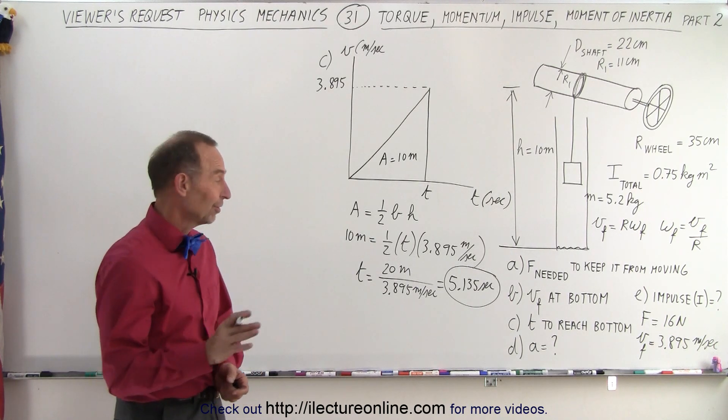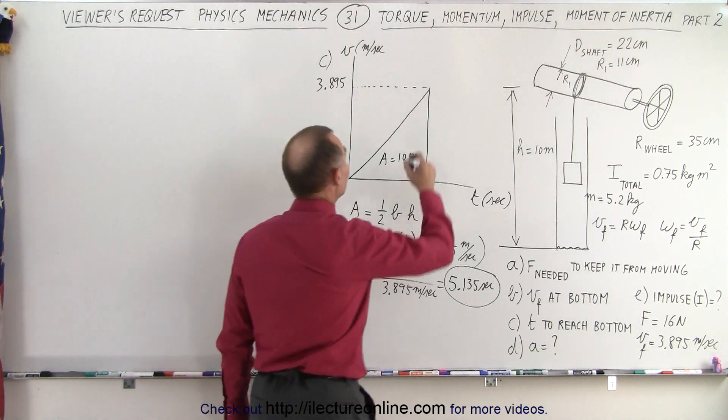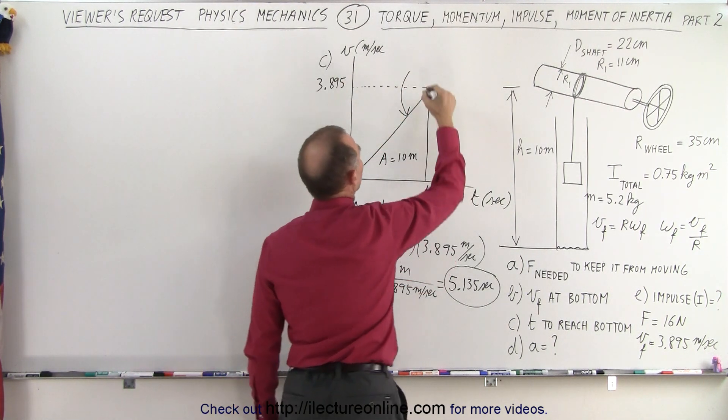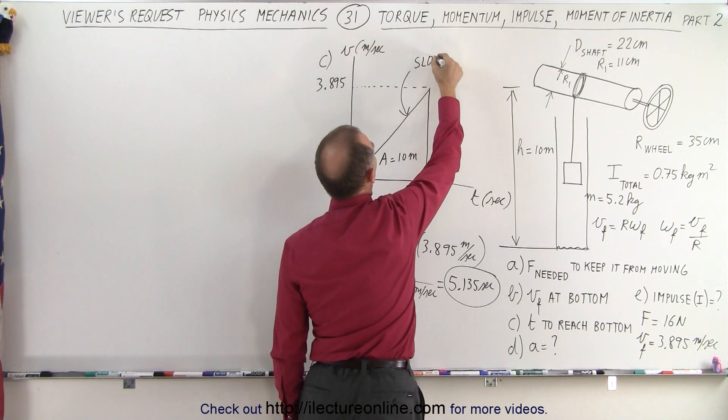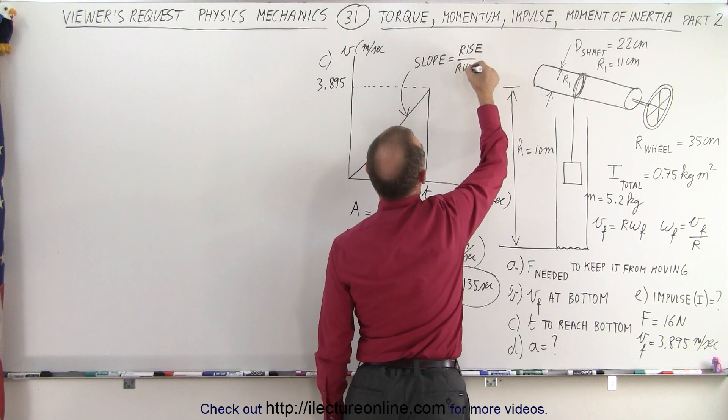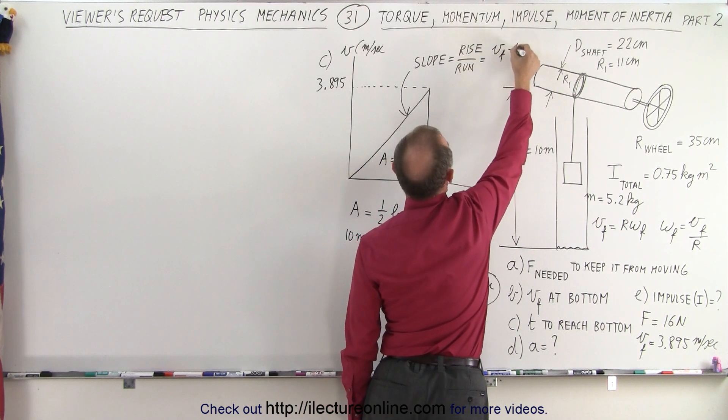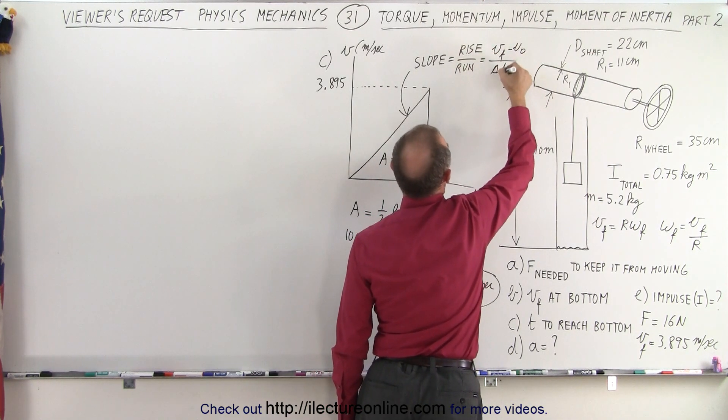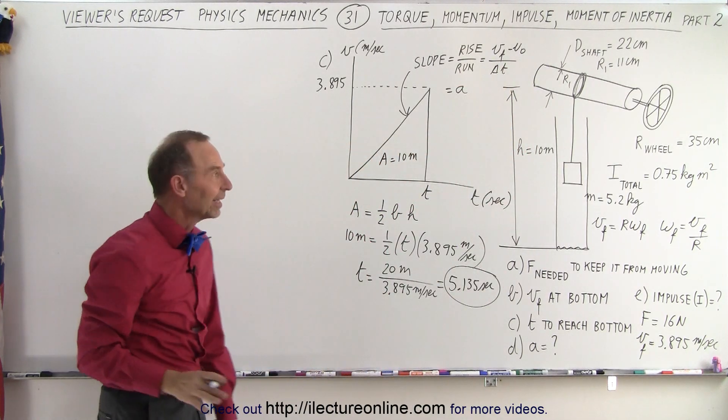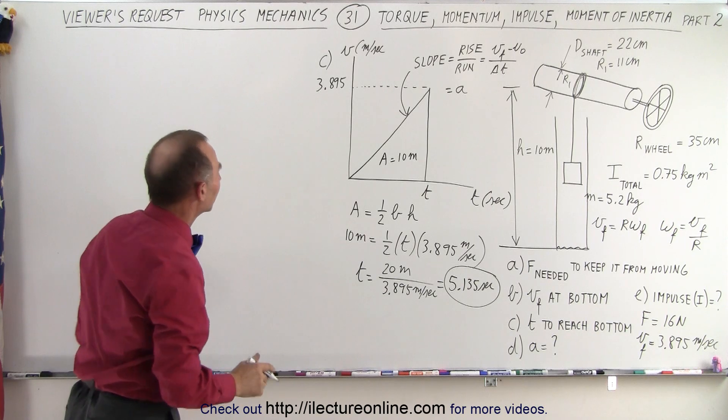Can we now figure out part D? And the answer is yes, because we know that the slope of a velocity versus time graph is equal to the area. So the slope is equal to the rise over the run, which is equal to V final minus V initial over the time elapsed, which is equal to the acceleration. So easily out of that graph, we can calculate the acceleration.